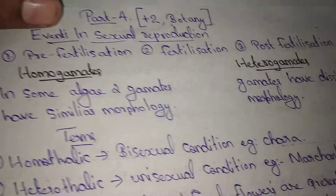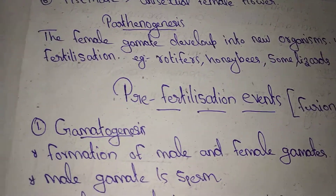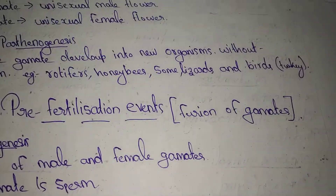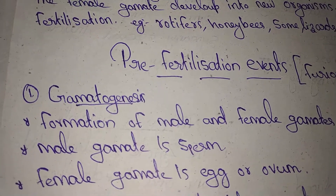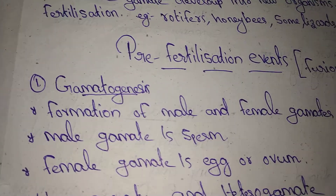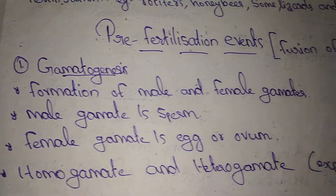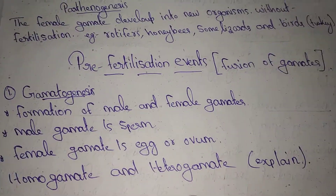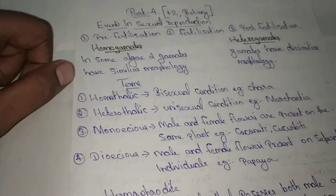Pre-fertilization events include gametogenesis — the formation of male and female gametes. The male gamete is sperm, and the female gamete is egg or ovum. Homogamete means two gametes have similar morphology; heterogamete means gametes have dissimilar morphology.